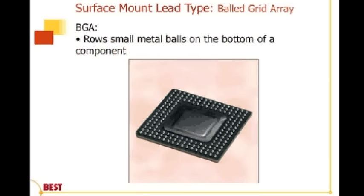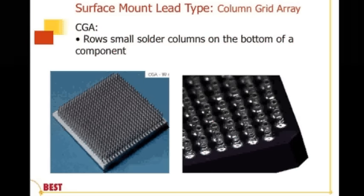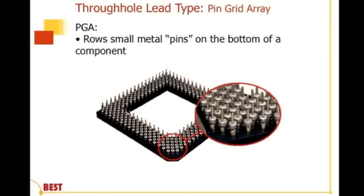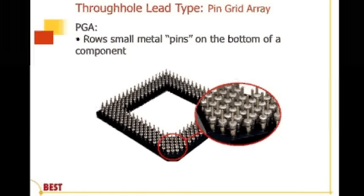Then we have ball grid array components, so-called BGAs, where we have a consistent array pattern. In this case we have a peripheral array pattern; we also have full array patterns on the complete bottom side of the device. The balls essentially make the interconnection, increasing density. Then we have column grid arrays used for high-reliability applications — similar to BGAs but with columns instead of balls — and you'll see little springs in lieu of or wrapping around the columns. Then there's a through-hole version called pin grid arrays with a high density of interconnections.